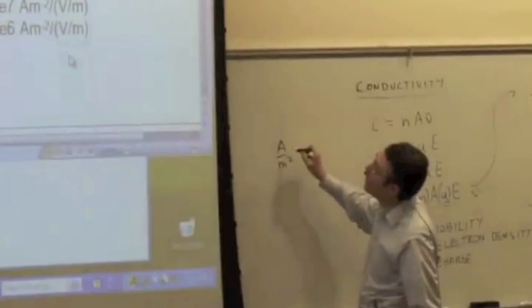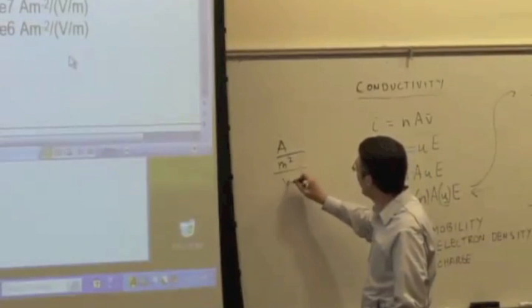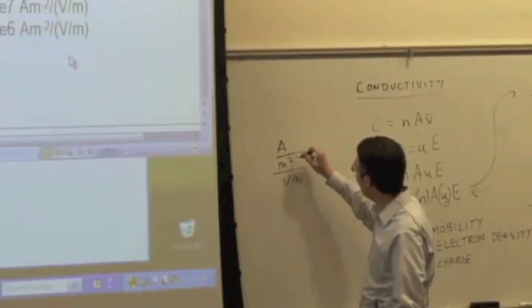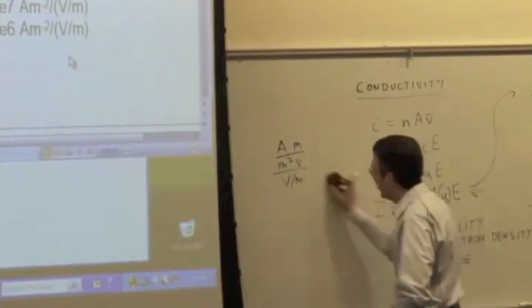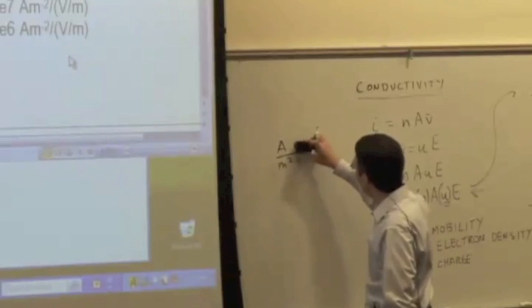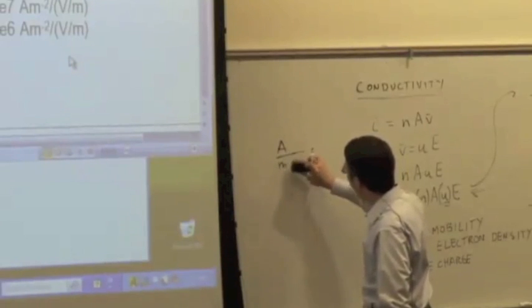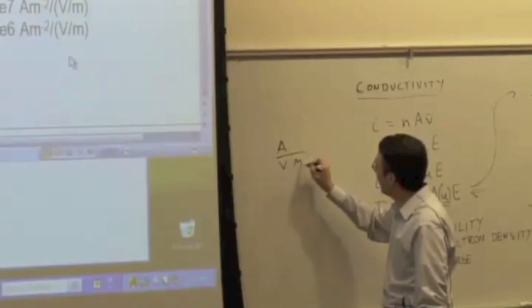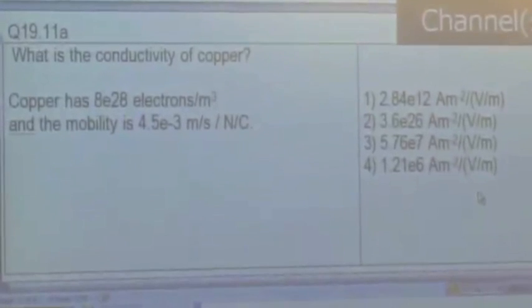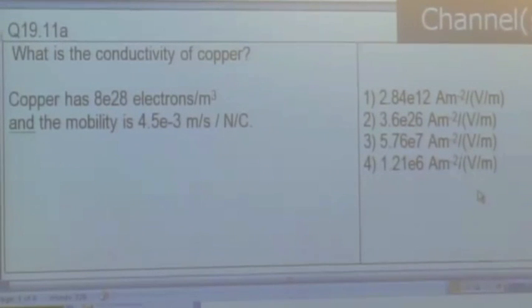Per meter squared divided by volts per meter. It's actually going to be ampere divided by volt meter. And in just a second, we'll introduce the ohm. In fact, conductivity is really measured in per ohm meter. So it's a little funny looking for right now, but we'll simplify it in just a second.